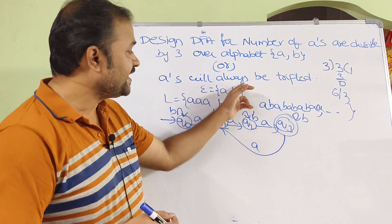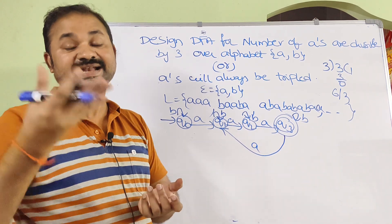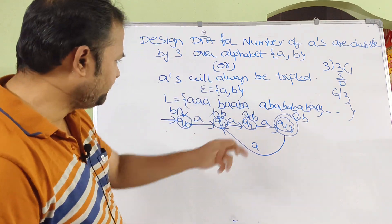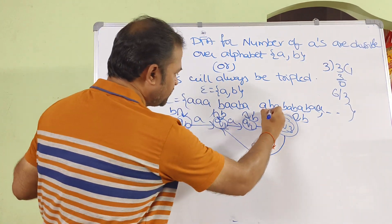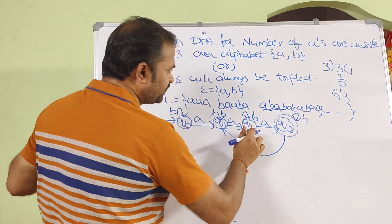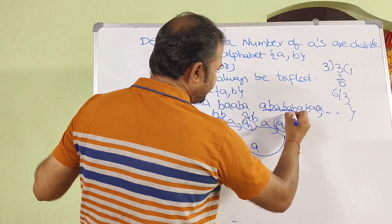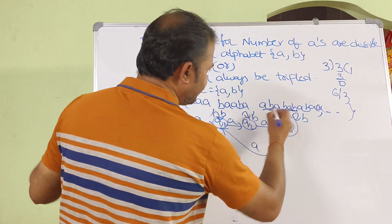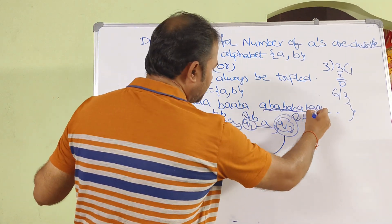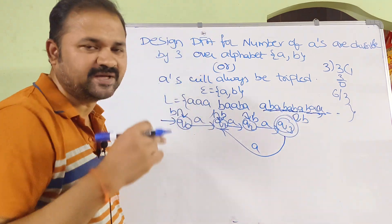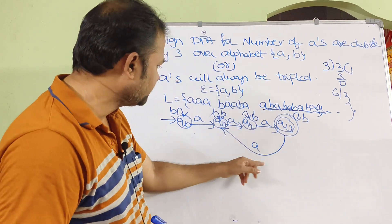The second phrasing of the problem says 'A's will always be tripled' — meaning 3 A's, 6 A's, 9 A's — these two formulations are the same. Let us verify the DFA with the transition table: Q0 on A goes to Q1; Q1 on B stays at Q1; Q1 on A goes to Q2; Q2 on B stays at Q2; Q2 on A goes to Q3; Q3 on A goes back to Q1. For 9 A's: 1st, 2nd, 3rd A reach Q3; then 4th, 5th, 6th A cycle back through Q1, Q2, Q3; then 7th, 8th, 9th A again reach Q3 — our final state.